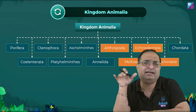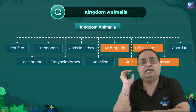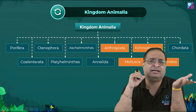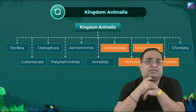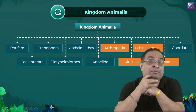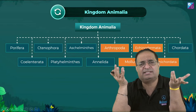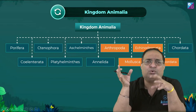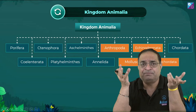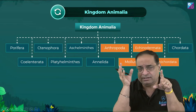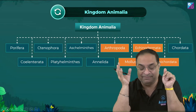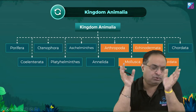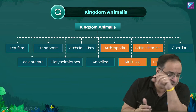Overall Animal Kingdom: Phylum Porifera, Cnidaria (which includes Hydra), Ctenophora — which is an exclusively marine phylum showing bioluminescence, with examples like Sea Walnut and Comb Jellies — Aschelminthes, Platyhelminthes, and Annelida. Let's now start from Arthropoda.